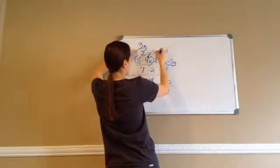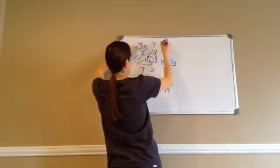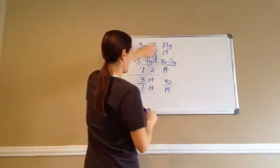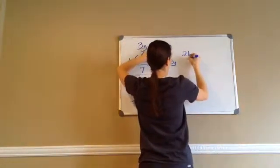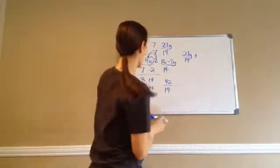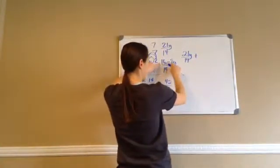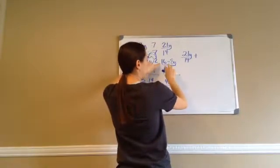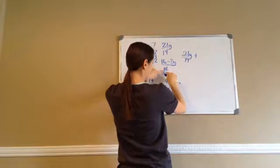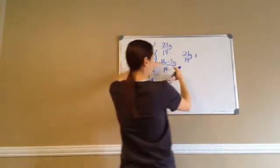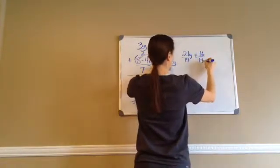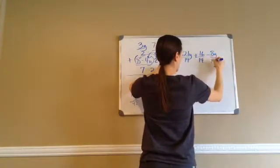2 times 7 times 7 — then that becomes 21y. Now that I've got it written down, I'm going to write it horizontally: 21y over 14 plus. Pay attention to what I do right here — you see this 16 minus 8y all over 14? I recommend putting it over 14 and over 14 because they're both over 14. So this is plus, and I'm going to write 16 over 14 minus 8y over 14.